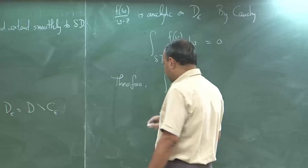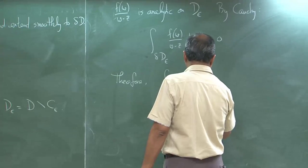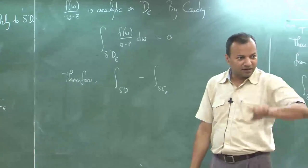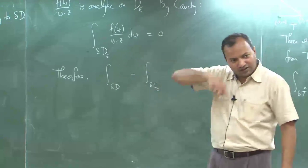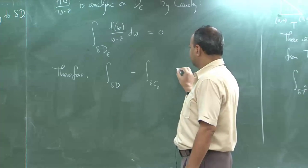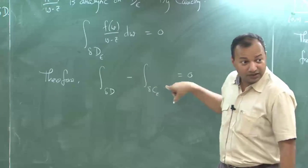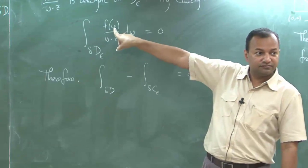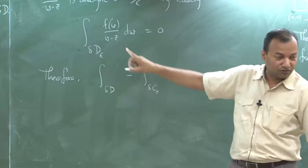I can write the traversal of ∂D_ε as the traversal of ∂D minus the traversal of C_ε, because when I say traverse C_ε that is counterclockwise, whereas in D_ε we traverse C_ε clockwise — so that is a negation of the integral. And this is 0.